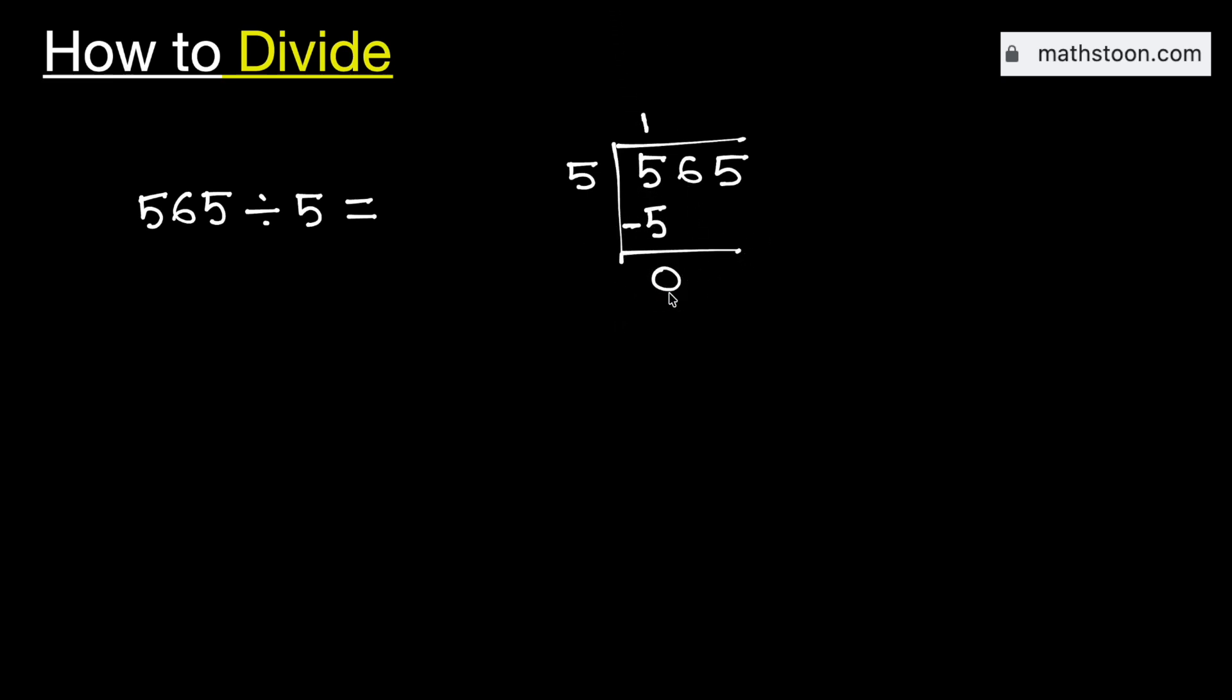As 0 is less than 5, that is why we need to bring down this number 6 here. Now see that this is the number 6. So we will remove this 0 here.